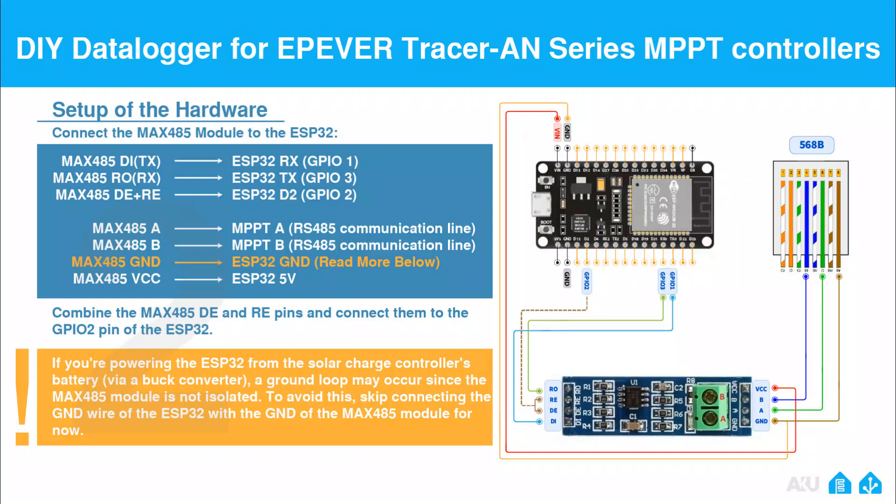Setup of the hardware: let's connect the MAX485 module to the ESP32. See the wiring diagram and connect all the wires correctly to the ESP32 module. You'll also need to solder the MAX485 DE and RE pins and connect them to the GPIO 2 pin of the ESP32. If your power source for the ESP32 is from the battery of the solar charge controller, a ground loop may occur since the MAX485 module is not isolated. To avoid this, skip connecting the GND wire of the ESP32 with the GND of the MAX485 module for now.